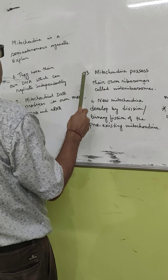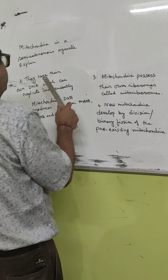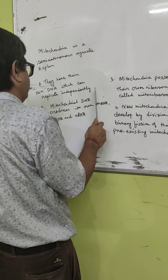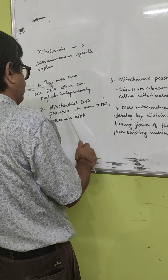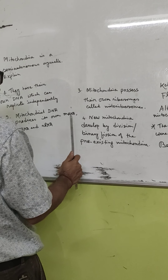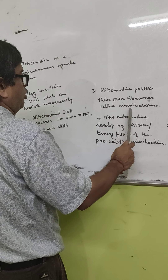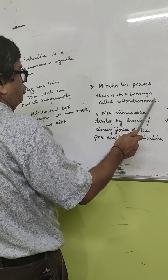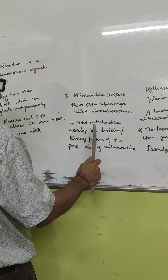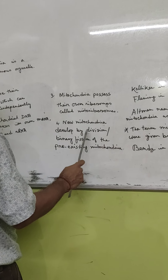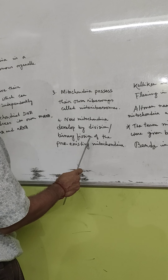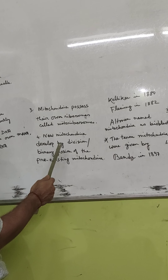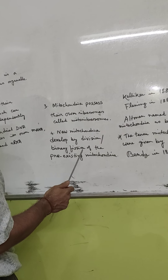To summarize why mitochondria are called semi-autonomous: they have their own DNA which can replicate independently; mitochondrial DNA produces its own mRNA, tRNA, and rRNA required for protein synthesis; mitochondria possess their own mitoribosomes for protein synthesis; and new mitochondria develop by binary division of pre-existing mitochondria.